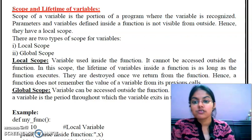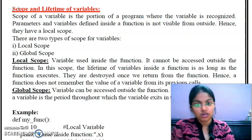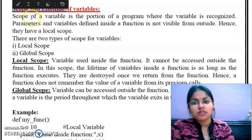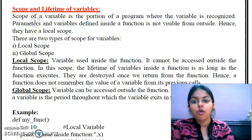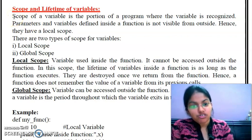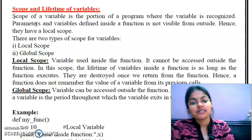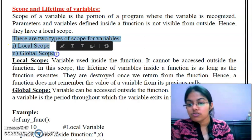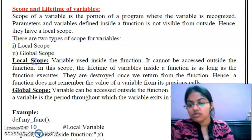Let's start with scope and lifetime of variables. The question arises: what do you mean by the term scope and lifetime? The scope of a variable is basically a portion of a program in which we can access that variable. There are basically two types of scope: local scope and global scope.